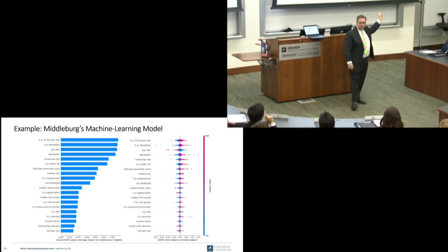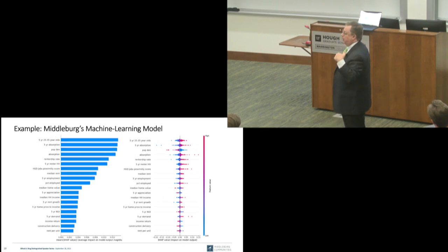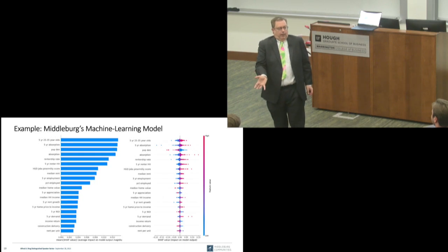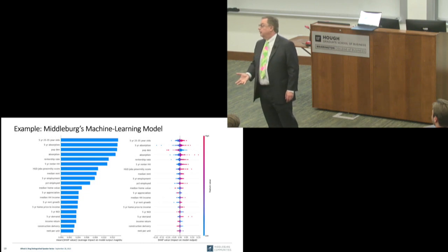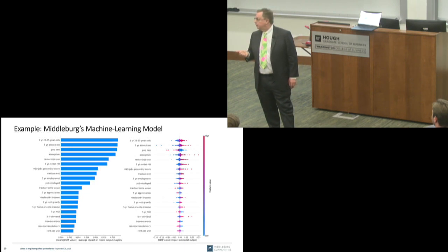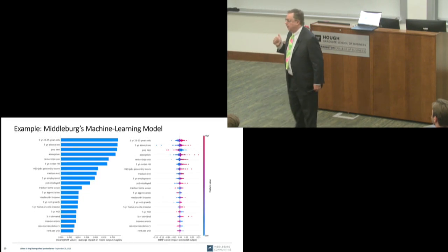The rentership rate is another variable. People in my company hate the idea that I pay attention to it. Their thinking is: go to places that really want renter housing but don't have it. But the reason they don't have it is often that they don't want it — the local government does not want rental housing there. The rentership rate is telling us how easy it will be to get entitlements. We focus on places where developing rental housing is going to be easier.